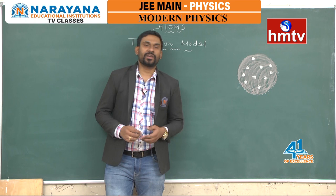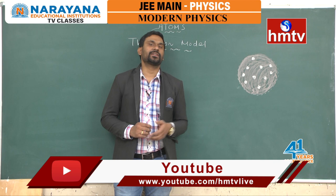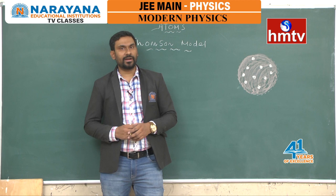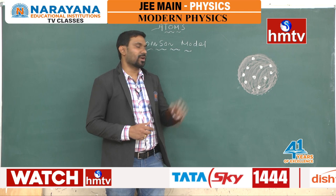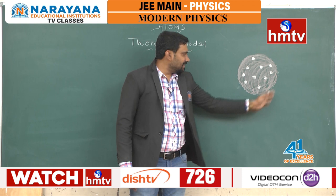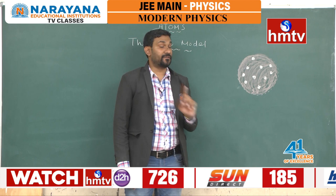Before going into the alpha scattering experiment and Rutherford model directly, first we will see Thomson's model. This is the first conceptual model of the atom, proposed around 1898, at the beginning of the 20th century. Thomson suggested that within the atom, positive charges are uniformly distributed over it. That is a very significant point — positive charges are distributed uniformly.